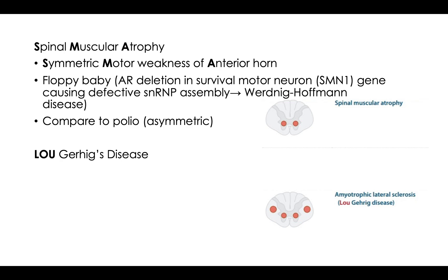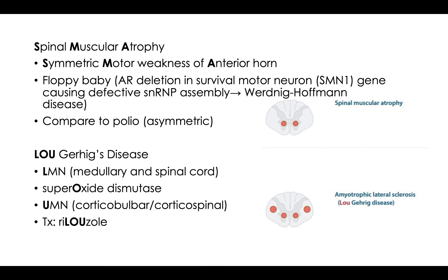Next we have Lou Gehrig's disease. In First Aid they use L-O-U to help you remember the drug, but I made it a full mnemonic. Lou for Lou Gehrig's disease, also called amyotrophic lateral sclerosis. The L is for lower motor neuron, the U is for upper motor neuron — so you have both lower and upper motor neuron lesions. The O I remember for superoxide dismutase, which is the same superoxide dismutase in the respiratory burst pathway. And the Lou can also help you remember riluzole, which is the treatment for ALS.